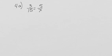Problem 4a is asking me to solve the proportion, which means I want to figure out the value for x. The first thing I want to do is multiply both sides by x. The x's cancel out, and I get 3x over 15 equals 5.